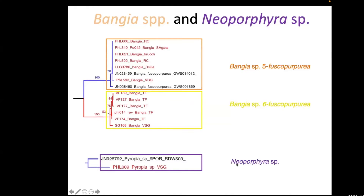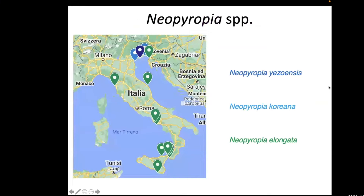Another difficult identification is this organism, which is a Neoporphyra sp. This species is similar to another from Texas, but we did not find more information at the moment and we will need to update this soon.